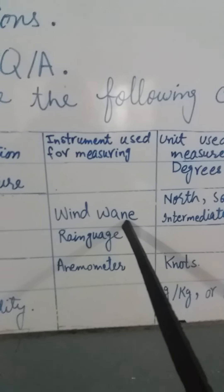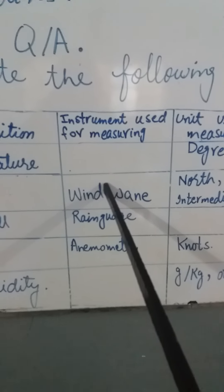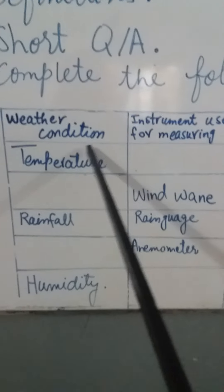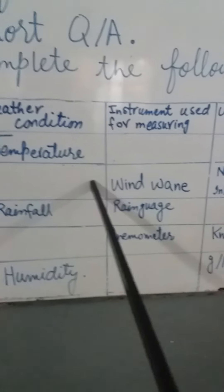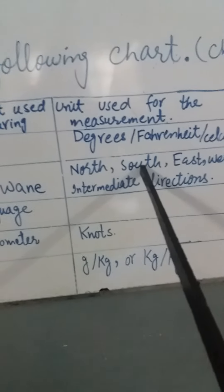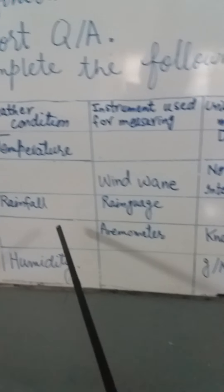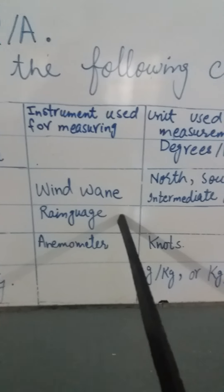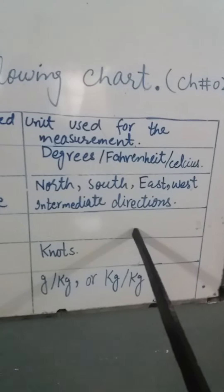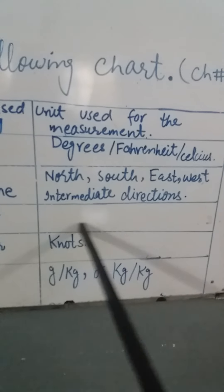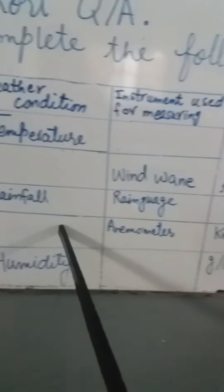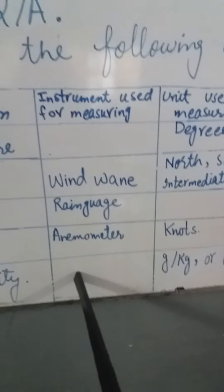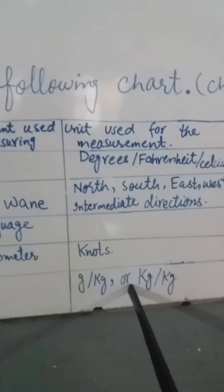You must know that the instrument wind vane corresponds to which weather condition — you will write its name in the weather condition column, and its unit used for measurement in the third column. For weather condition rainfall, the instrument is a rain gauge, and the missing entry is the unit used for measurement, which is millimeter. For weather condition, the instrument anemometer uses the unit knots. For humidity, the instrument used for measuring is missing and the unit of measurement is given.